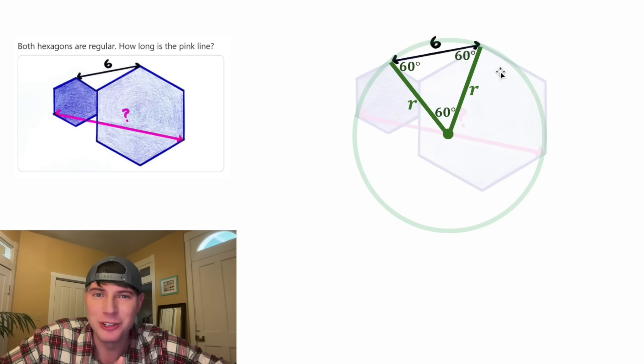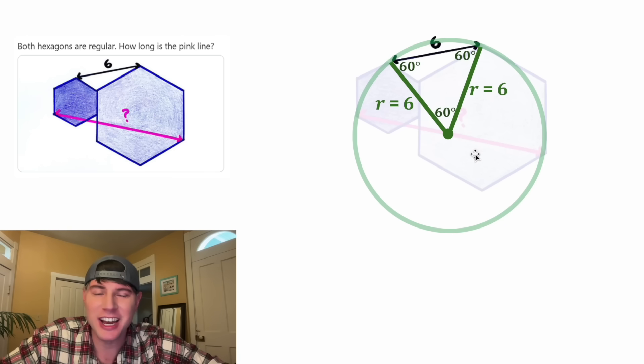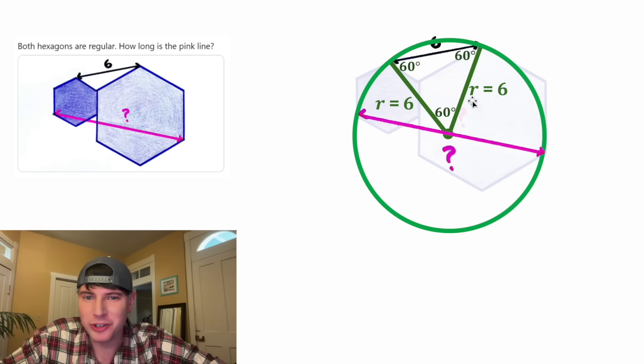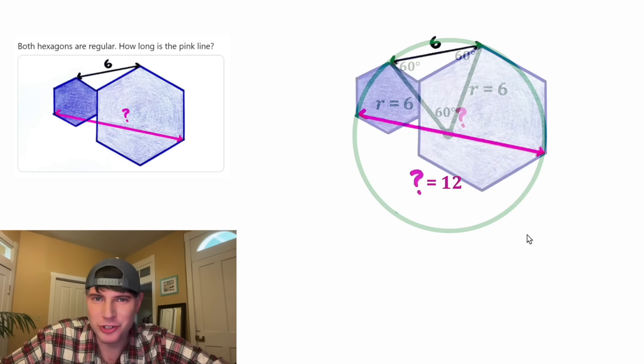That means this is an equilateral triangle. So all three of the sides have to be congruent. Since this is six, each of these will also be six. And each of these sides were a radius of this circle. And that means the diameter of the circle will be double of those, which is equal to 12. And this is the answer to our question.